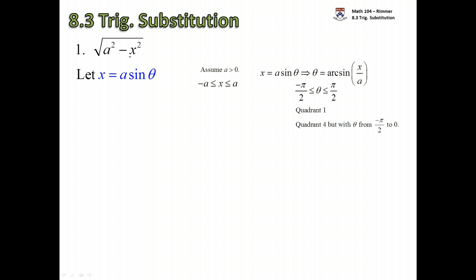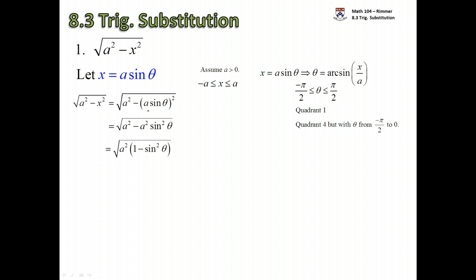With x and theta both restricted, letting x equal a·sin(θ) will simplify things and turn your integral into a trig integral. Let's see what happens to the root. Replace x by a·sin(θ): a squared minus x squared becomes a squared minus a squared sine squared, all under the root. Factor out the a squared and recognize what's left is cosine squared — a perfect square. Technically when we take the square root we have the absolute value.